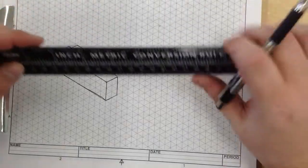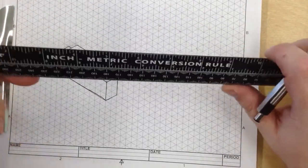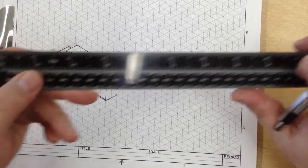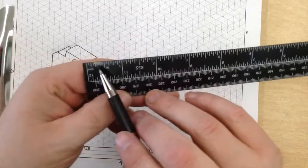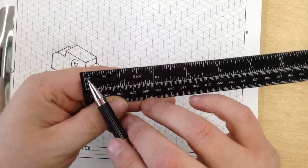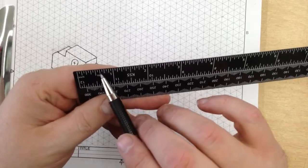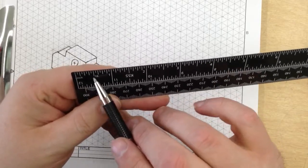Now the first thing you have to do is know that not all rulers are created equal. Most of the rulers that you're used to are like on this side. And this side, it's subdivided into sixteenths of an inch. You want to make sure that you're using something that's subdivided into sixteenths of an inch.